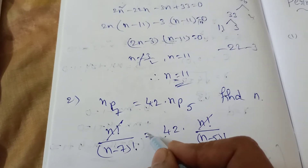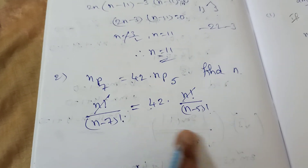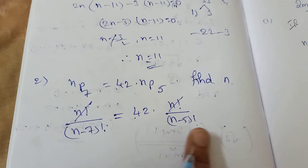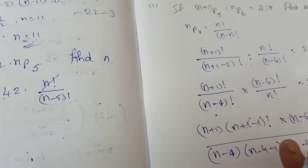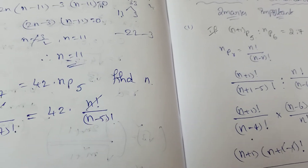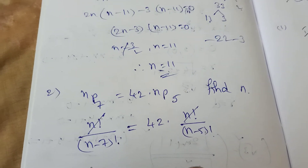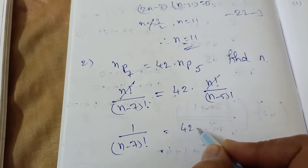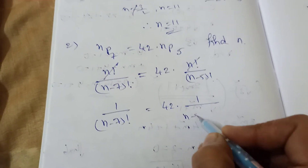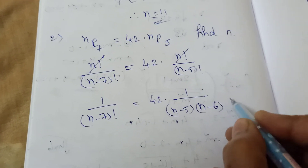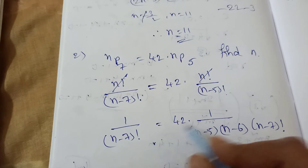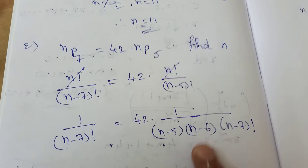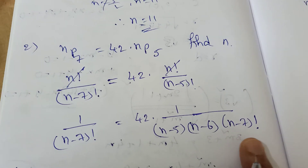Both sides have n factorial, so cancel them. Now expand (n minus 5) factorial as (n minus 5)(n minus 6)(n minus 7) factorial, and stop there because (n minus 7) factorial appears on the left side and can be cancelled.